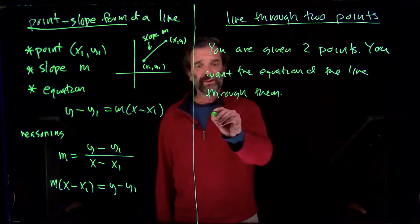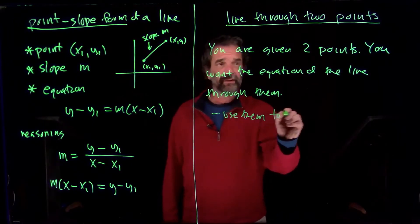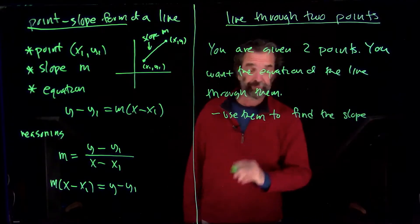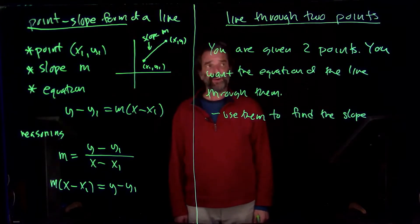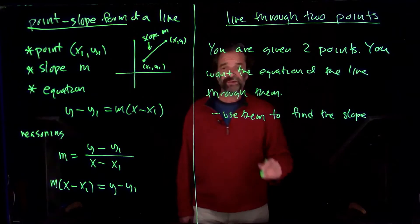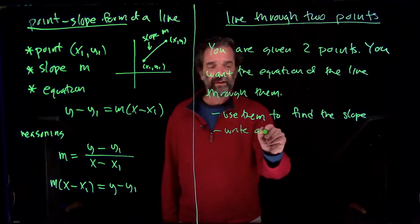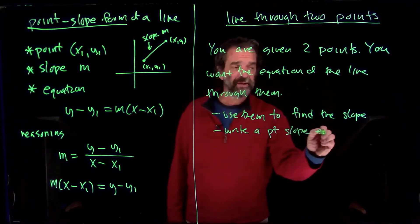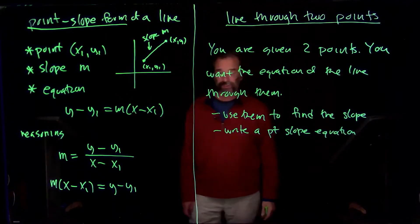So we're going to use those two points to find the slope. So we just use the slope equation using the two points. And then write the equation. Write a point-slope equation. If we just want an equation, we pick the easiest way to do it. Point-slope would be the easiest way.